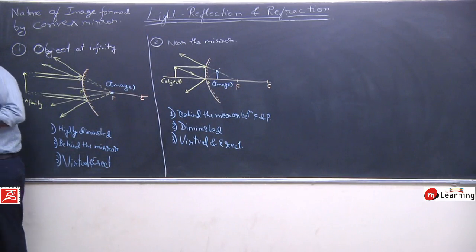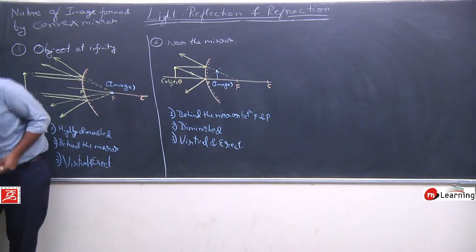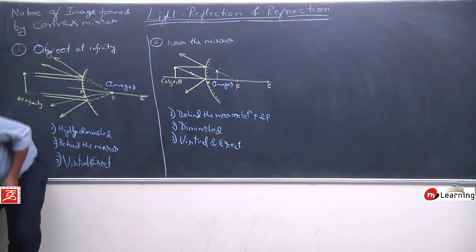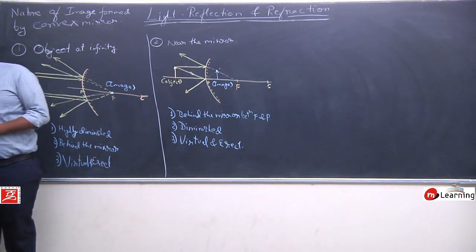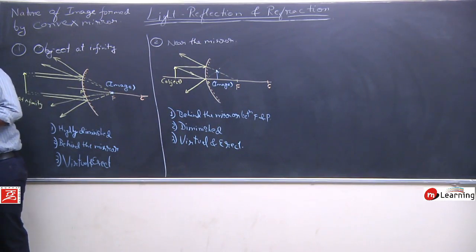And if you take the outward bulging part of the spoon as the reflecting surface, you can see that it behaves like a convex mirror - as you move, you will see an image forming in that way.